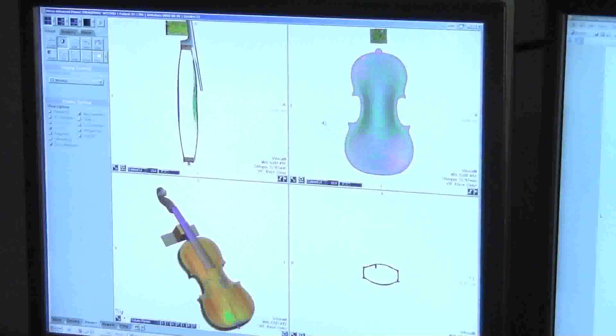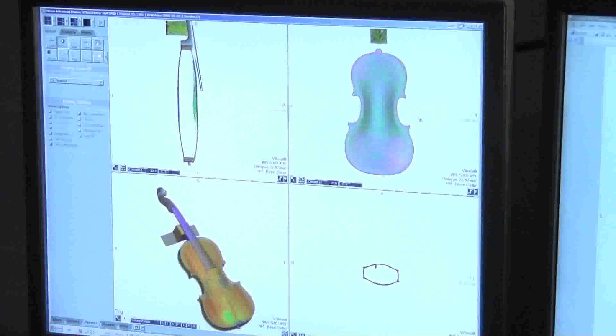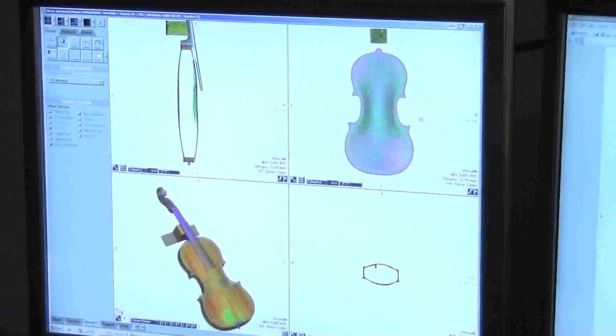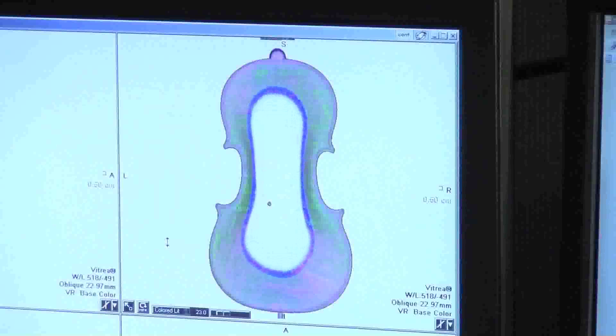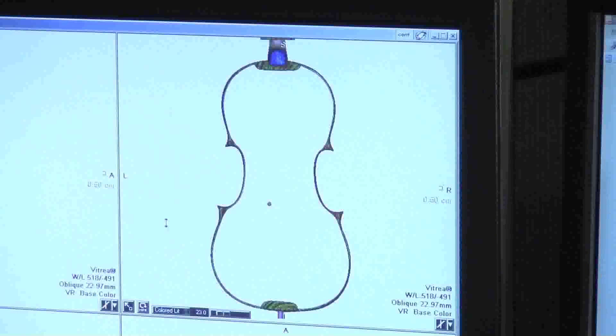This is an example of one of the violins. This is the 1709 Stradivarius. And what I've set up here is a rendering algorithm that shows us various densities in the woods. So the greens and purples are the most dense. This is the back plate of the violin.